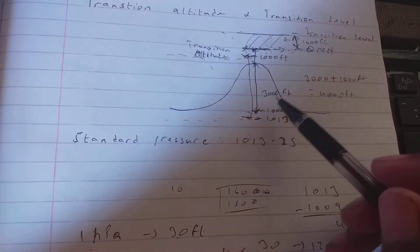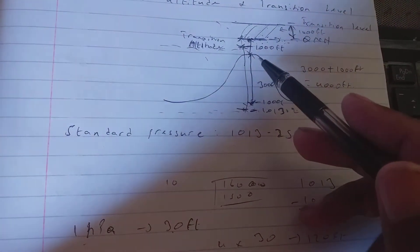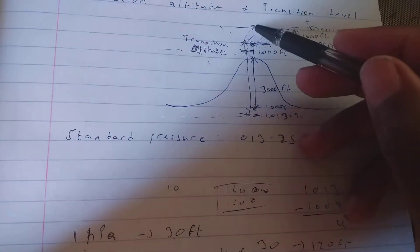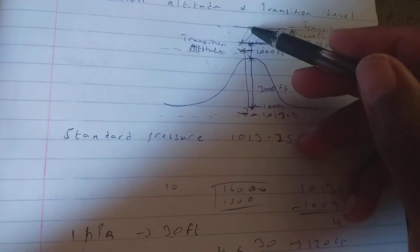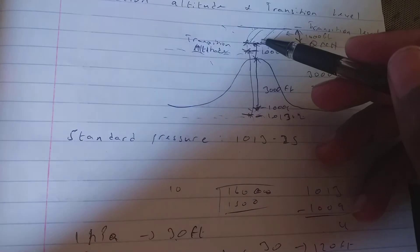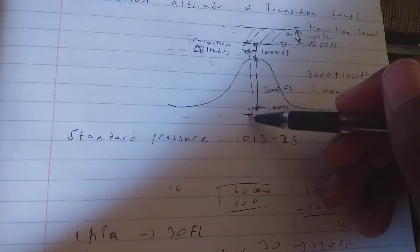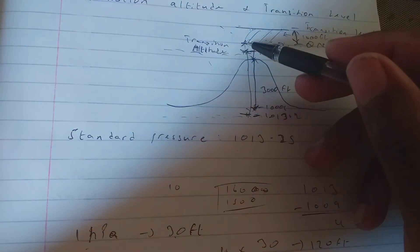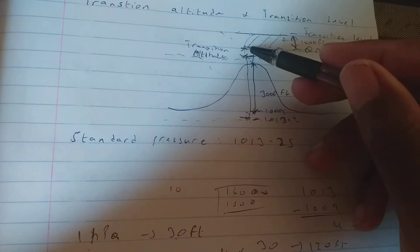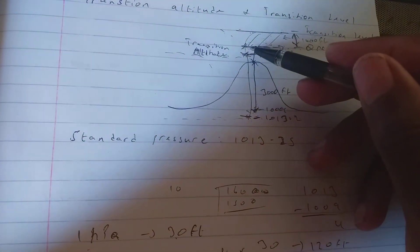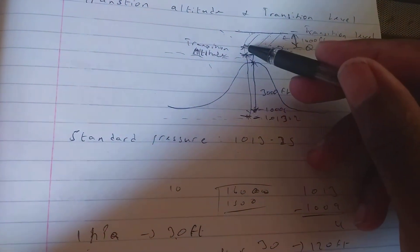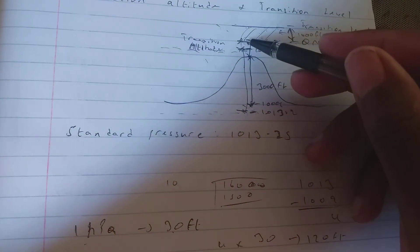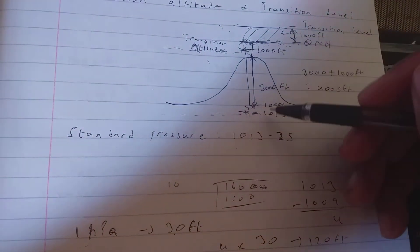To calculate the transition level, we must take the height of the aircraft on the standard pressure. If we take this altimeter which is for the standard pressure, the height of the aircraft would be lower than the transition altitude.